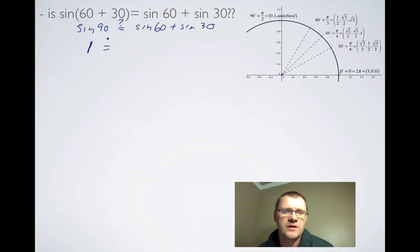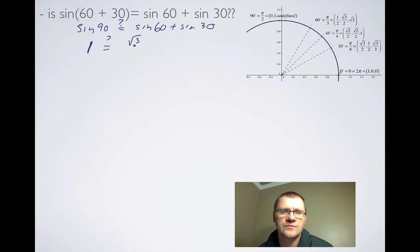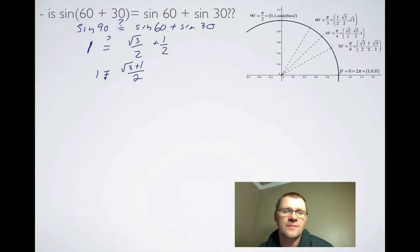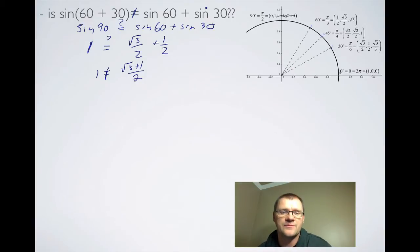So is 1 equal to sine of 60? Well, sine of 60 is root 3 over 2, plus sine of 30, and that's a half. So root 3 plus 1 over 2 is not the same thing as 1. That means sine of 60 plus 30 is not equal to sine of 60 plus sine 30.